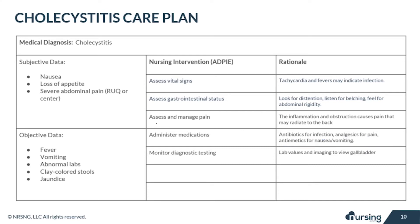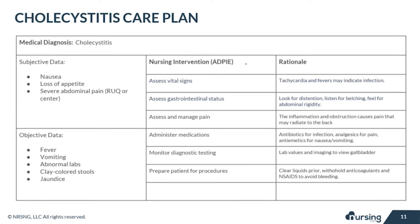Be sure to monitor the diagnostic testing of your patient — look at those lab values and imaging to view the gallbladder and how it's doing. You will also prepare your patient for any procedures they might have. The patient might be on a clear liquid diet prior, and you will need to withhold any anticoagulants and NSAIDs to avoid bleeding.